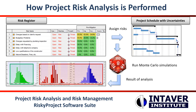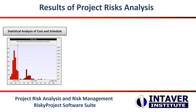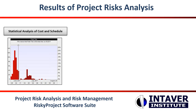The results of the analysis are a statistical distribution of project cost, finish time, and other project parameters, as well as ranking risks in the risk register. After running the Monte Carlo project risk analysis, there are three main outputs. The first is the statistical analysis of cost and schedule, provided in the form of histograms or probability charts, and cumulative probability plots or S-curves.